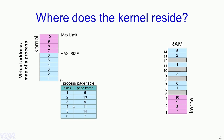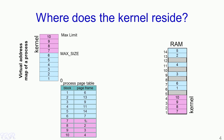In the process's page table, there are entries corresponding to this map. For instance, entries 7, 8, 9 and 10 correspond to the blocks that have the kernel code and data, and the page table tells us that they are mapped into page frames 1, 2, 3 and 4.